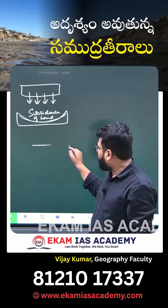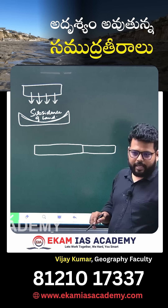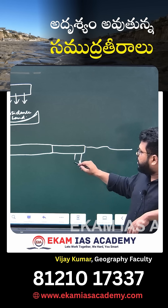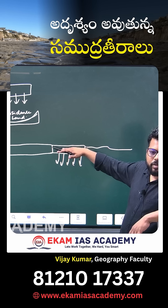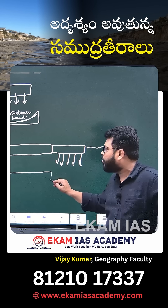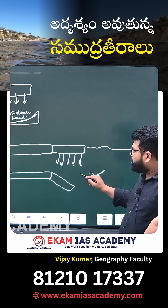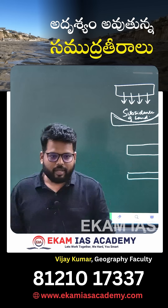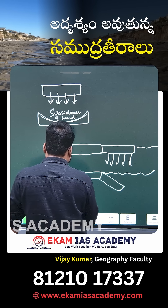If the same downward epirogenic movement acts along the coastal area, the downward epirogenic movement causes the region to go under water. Then we shall be having new formation of continental shelf. The name of this coastal region is submergence of coast.